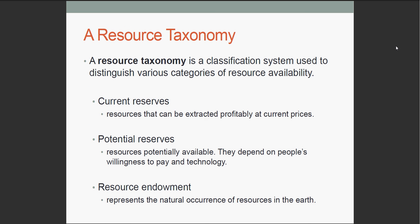So first, let's discuss resource taxonomy. This is a classification strategy used to distinguish various types of resource availability. First, we have current reserves. They are the reserves which can be extracted profitably at current prices. Potential reserves are reserves which cannot be extracted profitably at this point, but could be with higher willingness to pay or improved technology. The resource endowment represents the natural occurrence of resources on the planet.